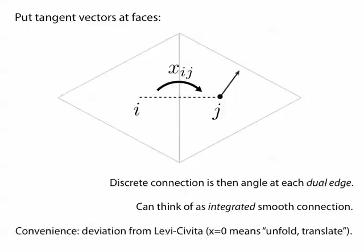Now if we want to write down some other connection, we can write it down relative to the Levi-Civita connection. If we write down an angle of zero, that means just translate. If we write down some other angle, that means translate across that shared edge and then apply some little rotation.